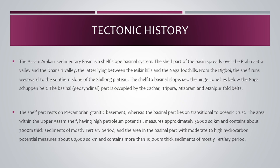The Assam-Arakan Sedimentary Basin is a shelf-slope basinal system. The shelf part of the basin spreads over the Brahmaputra Valley and the Dhanseeri Valley, lying between the Mikir Hills and the Naga foothills. From Digboy, the shelf runs westward to the southern slope of the Shillong Plateau. The shelf-to-basinal slope, the hinged zone, lies below the Naga-Shapan belt. The basinal part is occupied by the Kachar, Tripura, Mizoram, and Manipur fold belts. The shelf part rests on Precambrian granitic basement, whereas the basinal part lies on transitional to oceanic crust. The Upper Assam shelf area of high petroleum potential measures approximately 56,000 square kilometers and contains about 7,000 meters of thick sediments, mostly Tertiary. The basinal area with moderate to high hydrocarbon potential measures about 60,000 square kilometers and contains more than 10,000 meters of thick sediments, mostly Tertiary.